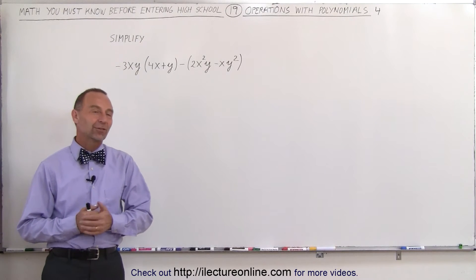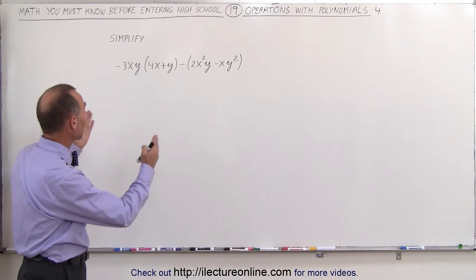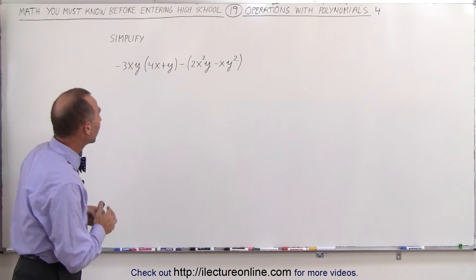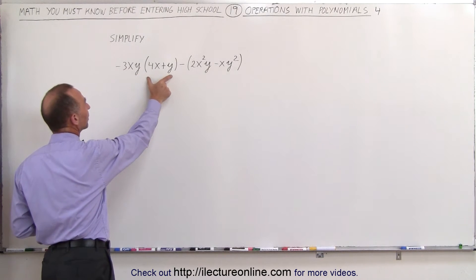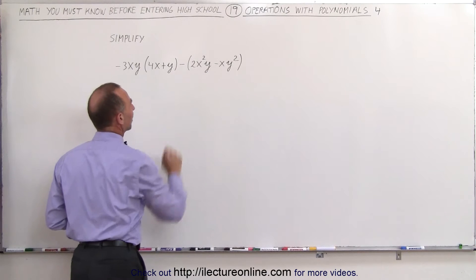Welcome to Electron Line. Here's our next video where we have to simplify this expression. We'll have to multiply this times the binomial here and then subtract from that this binomial there.